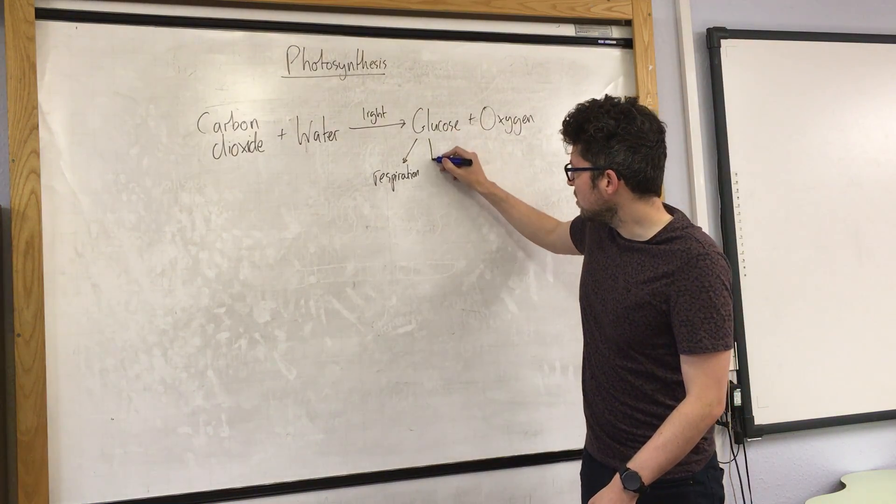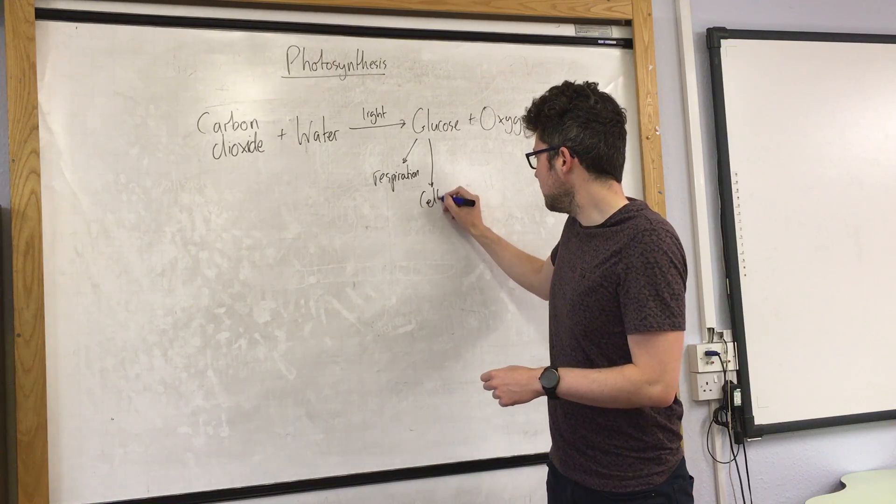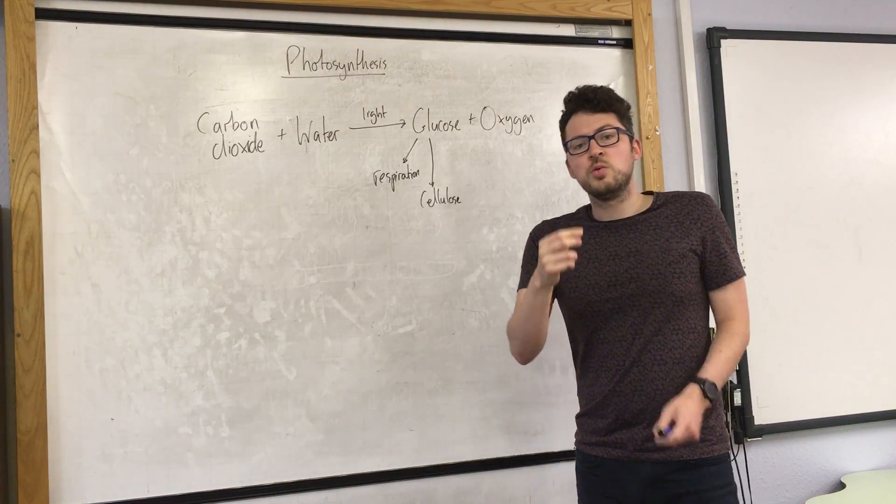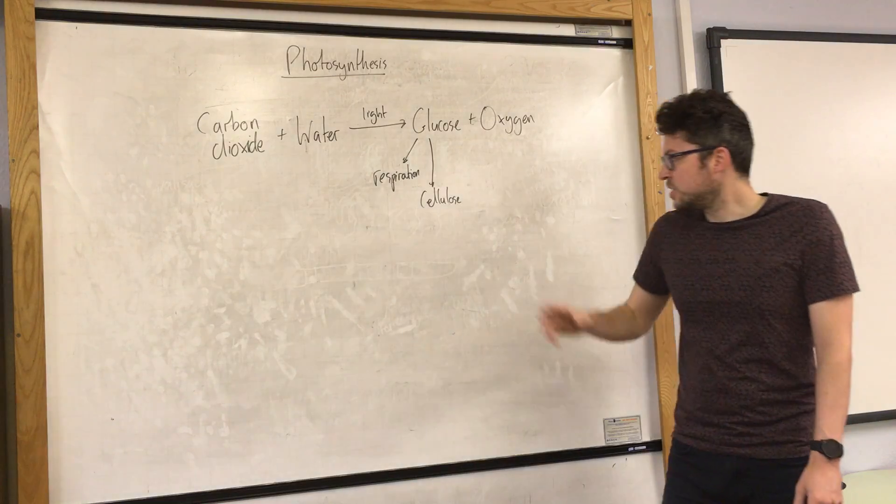They also use glucose to make cellulose. Cellulose is a tough fibrous compound found in the cell walls of plant cells.